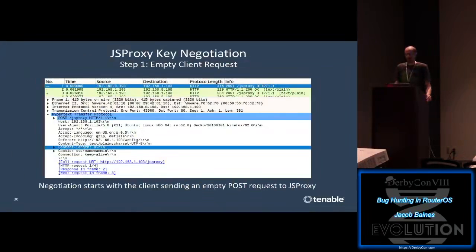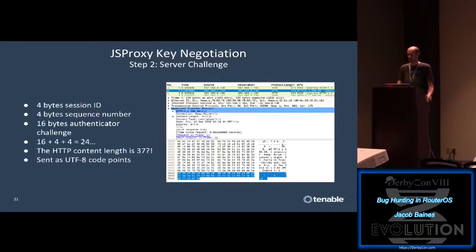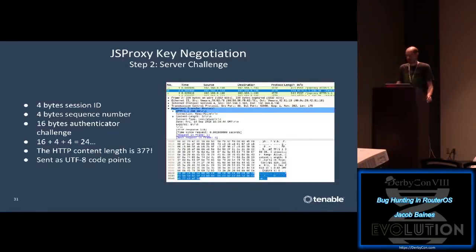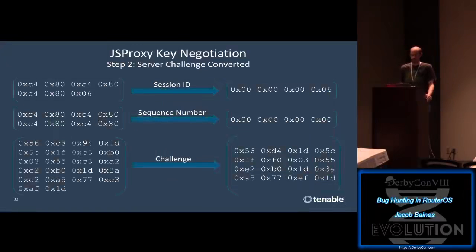Before we can decrypt anything we need to know how the key negotiation works. It starts with the client sending an empty HTTP POST request. The server response contains four bytes of session ID, four bytes of sequence number, and 16 bytes of challenge text - adding up to 24 bytes. The content length in the HTTP response is 37 bytes, and it turns out everything is encoded into UTF-8 code points so the payload size is variable. Decoding the code points gives exactly 4+4+16 bytes.